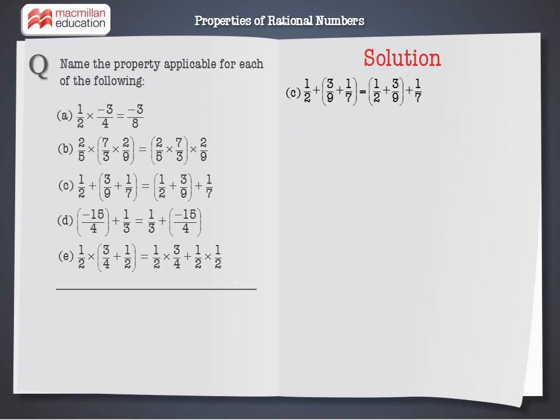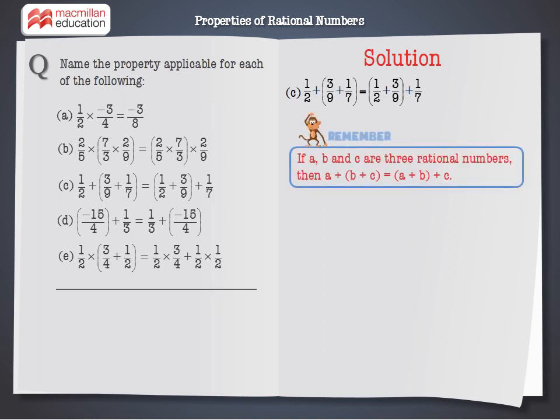In C also, observe that the three rational numbers are the same on either side. But the operation here is addition. This verifies that the grouping of adding three rational numbers does not affect the final result. Thus, this illustrates the associative property of addition of rational numbers.